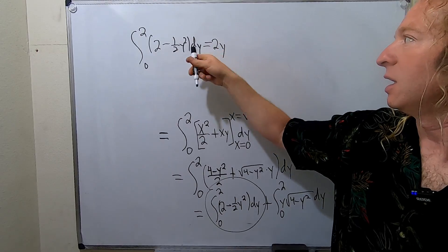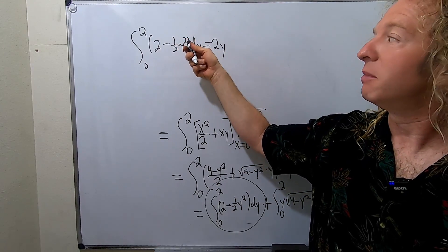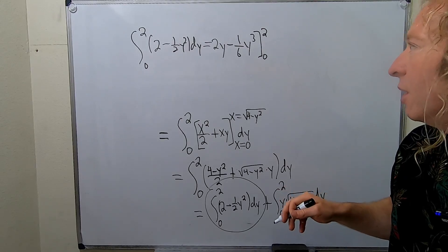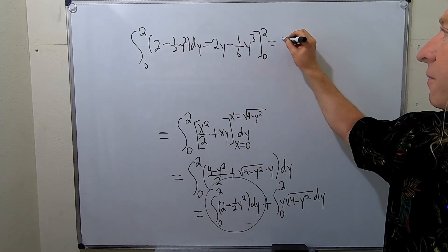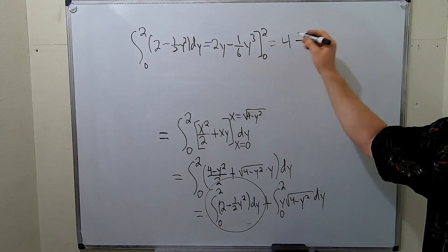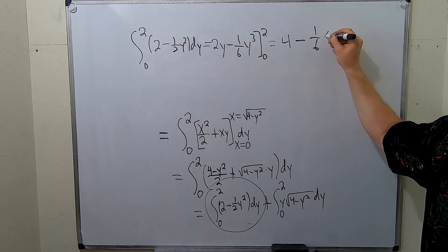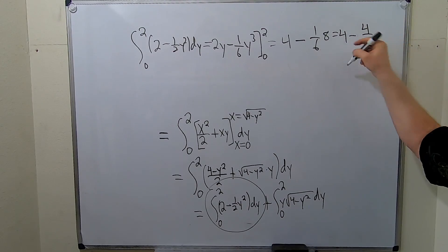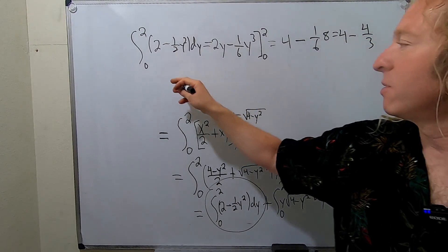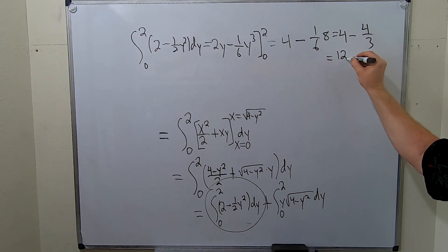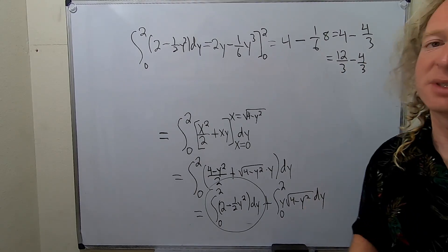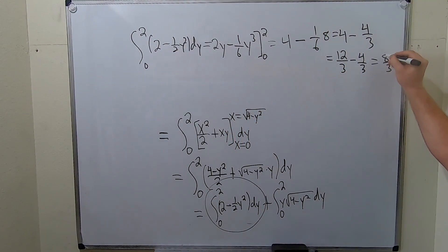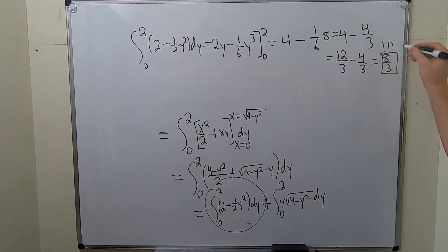Using regular integration: integrating 2 gives 2y, and integrating one-half y squared — add 1 to the exponent and divide — gives y cubed over 6, since 3 times 2 is 6. So we get 2y minus one-sixth y cubed from 0 to 2. Plugging in 2: 2 times 2 is 4 minus one-sixth times 8, which is 4 thirds. So this equals 4 minus 4 thirds, which is 12 thirds minus 4 thirds, giving 8 thirds.